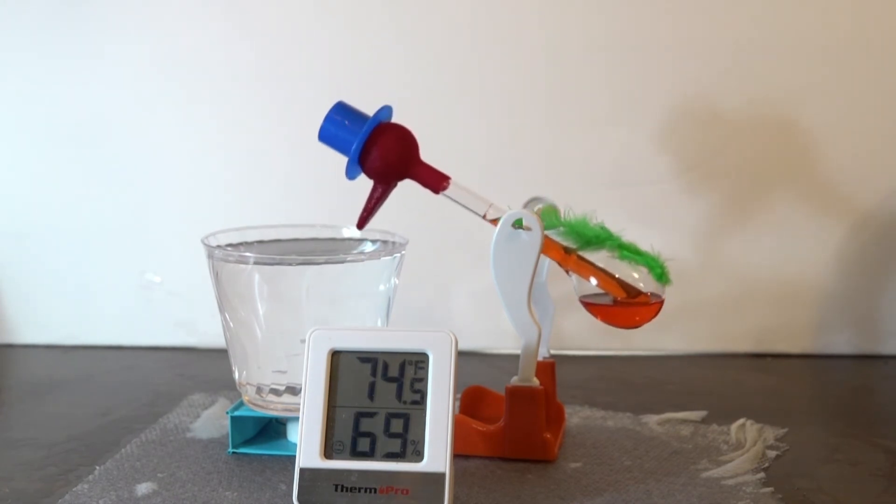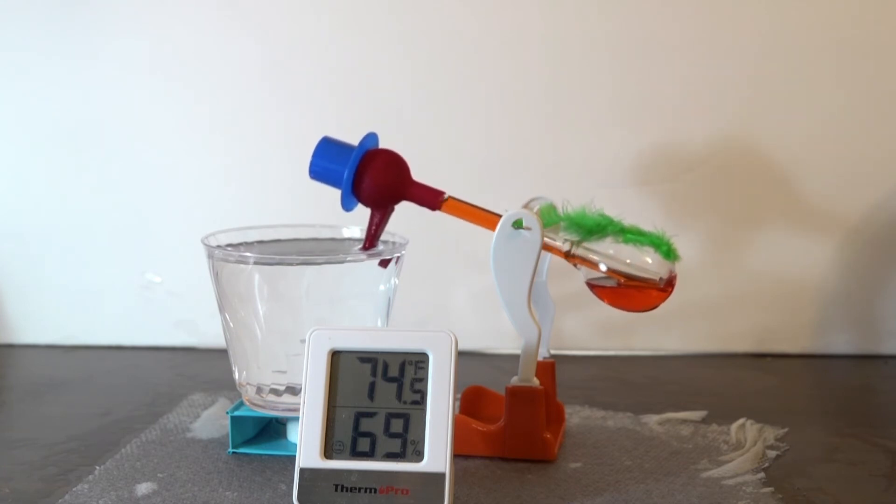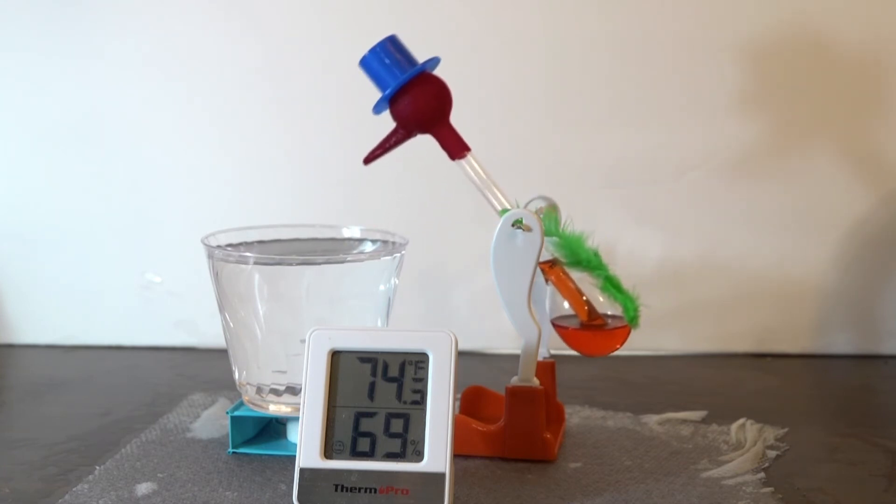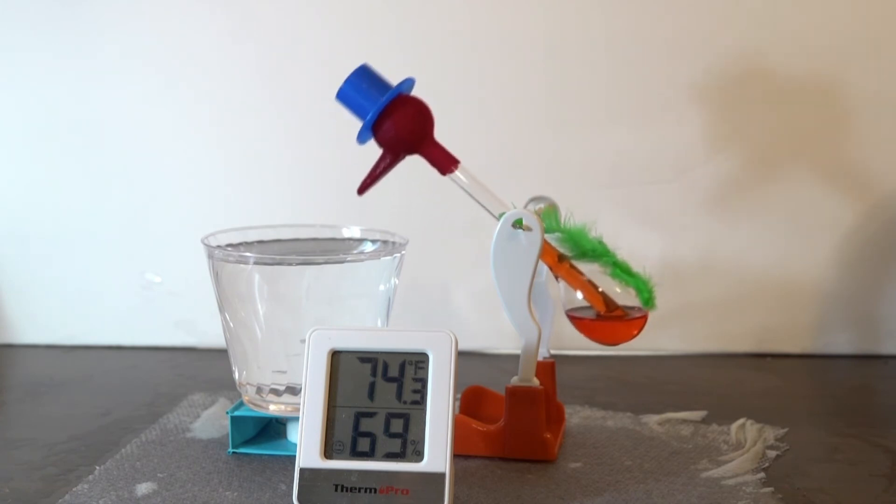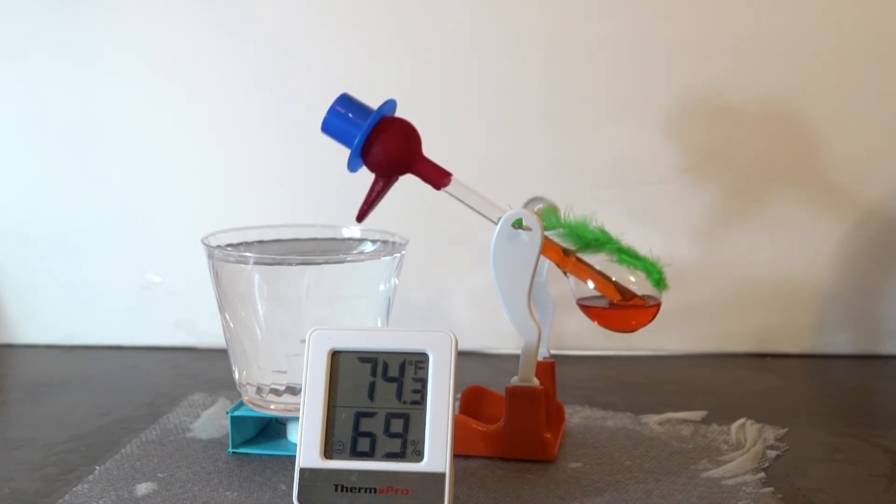The best way to stop a drinking bird from drinking without touching it is to increase the humidity. And if you want it to start drinking again, decrease the humidity.